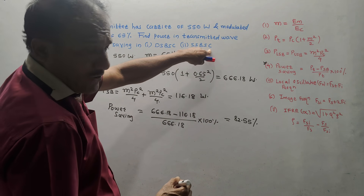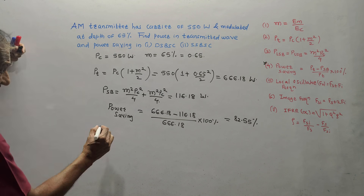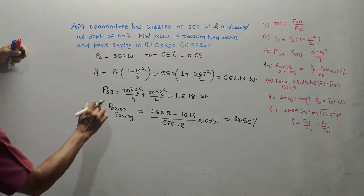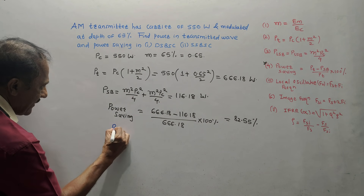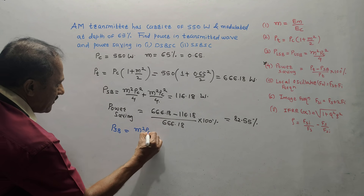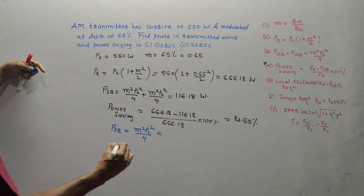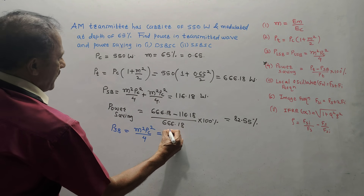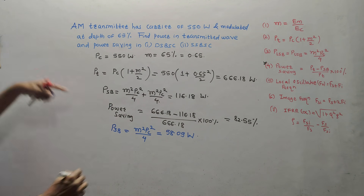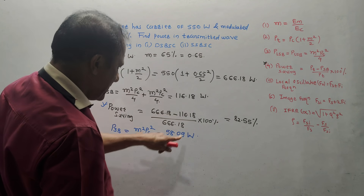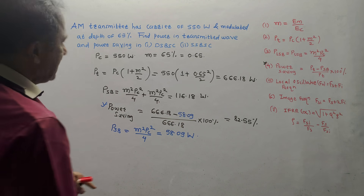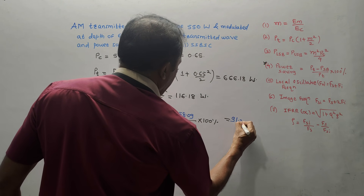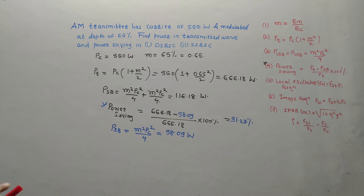For SSBSC, you transmit only one sideband. Using the same power saving formula, PSB = M² × PC / 4 = 0.65² × 550 / 4 = 58.09 W. Power saving = (666.18 − 58.09) / 666.18 × 100% = 91.27%. So transmitting a single sideband and suppressing the carrier gives a power saving of 91.27%.